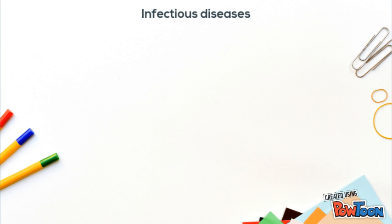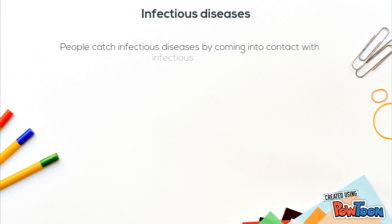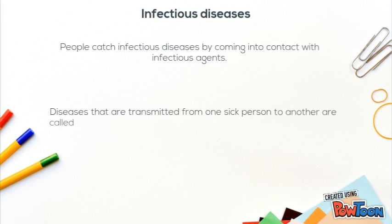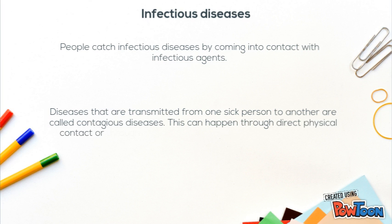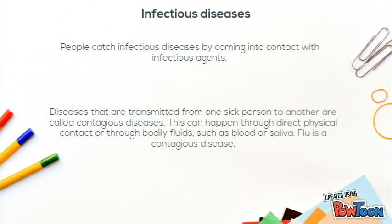But how can we catch an infectious disease? People catch infectious diseases by coming into contact with infectious agents. Diseases that are transmitted from one sick person to another are called contagious diseases. This can happen through direct physical contact or through bodily fluids such as blood or saliva. Flu is a contagious disease.